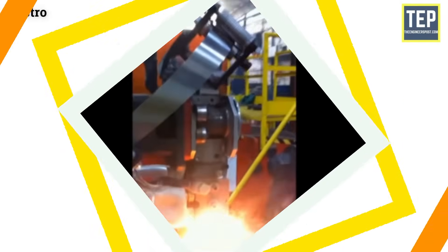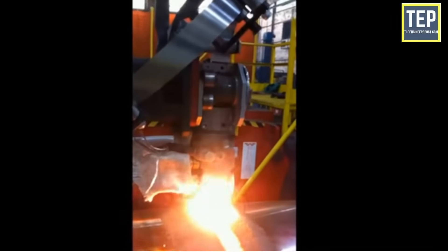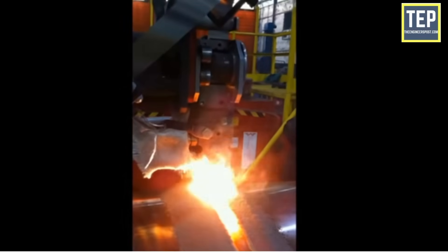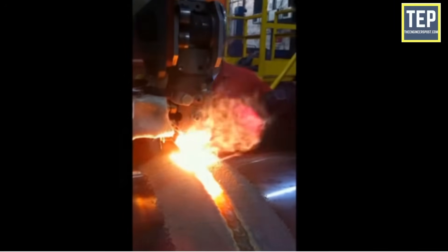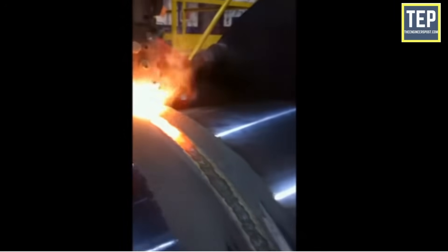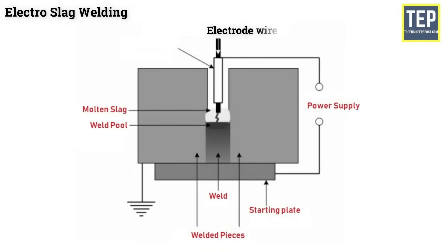Electroslag welding is an advanced welding process used to connect the thin ends of two metal pieces vertically together. Instead of the weld being applied to the outside of a joint, it will take place between the ends of the two pieces. A copper electrode wire is fed through a metal guide tube that will act as a filler metal. When power is added, the arc is produced and a weld is started below the seam and moved up slowly, creating a weld in place of the seam.